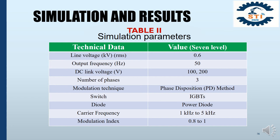Here are the simulation parameters. From this table, you can see that during the simulation, the line voltage is fixed at 0.6 kV, operating frequency is fixed at 50 Hz, and DC link voltages are selected at 100 V and 200 V. Number of phases is 3. Phase disposition method is used as the modulation technique. IGBT is used for switching devices. The range for the carrier frequency is 1 kHz to 55 kHz and the modulation index is 0.8 to 1.